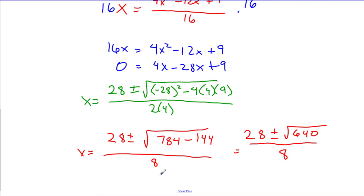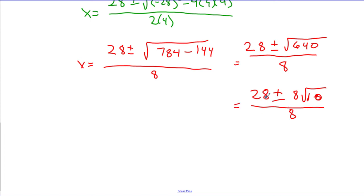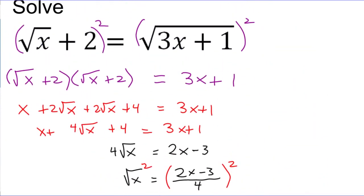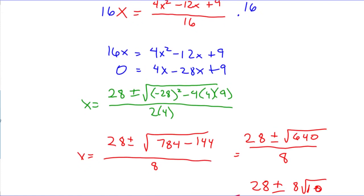Unlike the last problem, here we can simplify a little bit more because 640 contains a factor of 64. The square root of 64 is 8, so the square root of 640 simplifies to 8 root 10. So I have 28 plus or minus 8 root 10, all over 8. Now, 28 over 8 and 8 over 8 are fractions that can be simplified — dividing all terms by 4 gives 7 plus or minus 2 root 10, all over 2. This is my simplest radical form representing the solution to the original problem, which involved two separate squarings before I could eliminate all radicals and solve the quadratic equation.